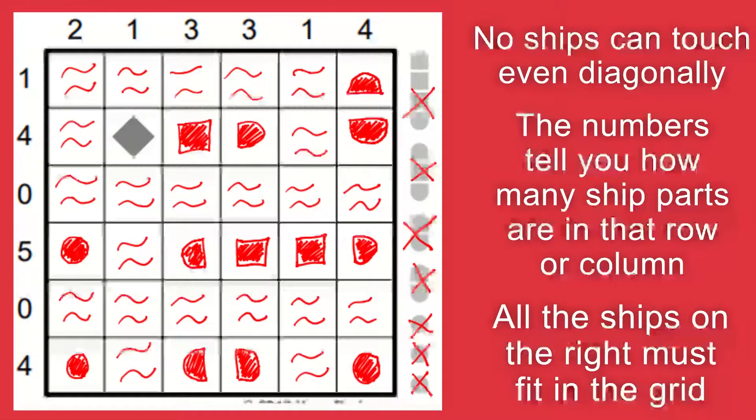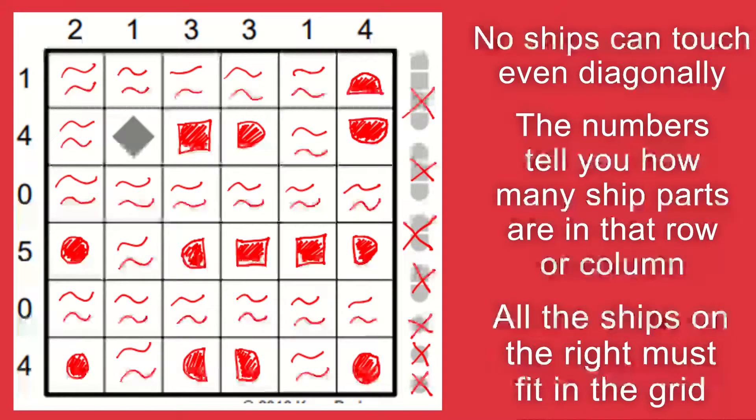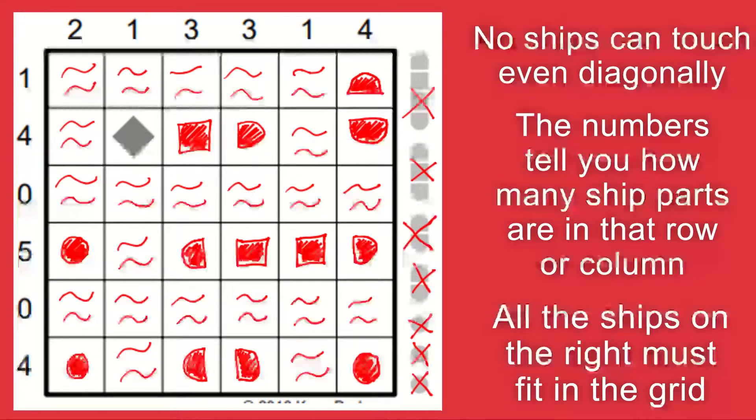It's very useful to be able to mark on the grid where there can't be a piece of ship. For example, where you've got a zero in a row or column, then obviously you can fill that whole column or row in with water.